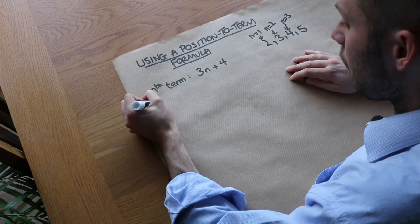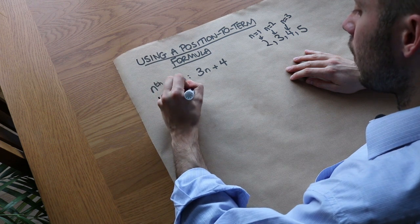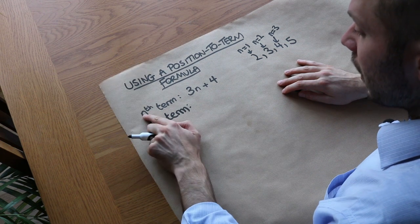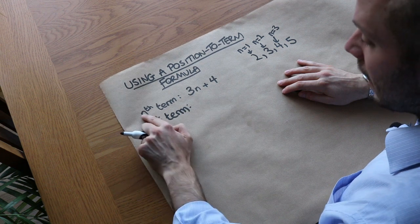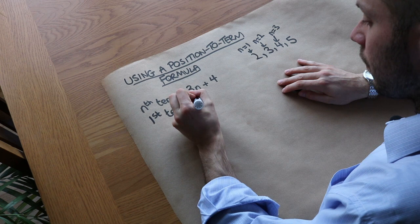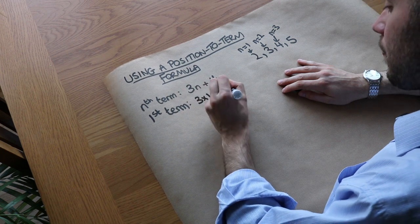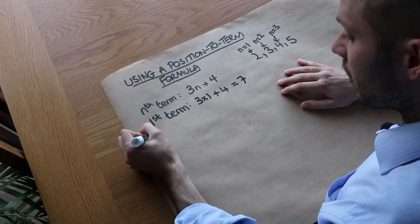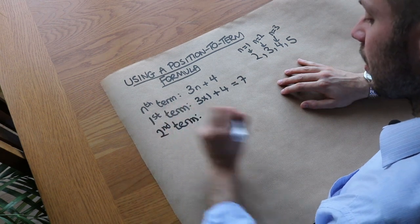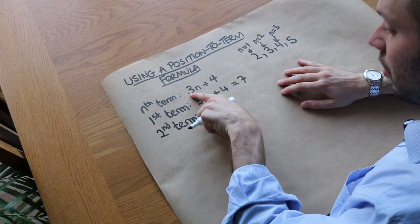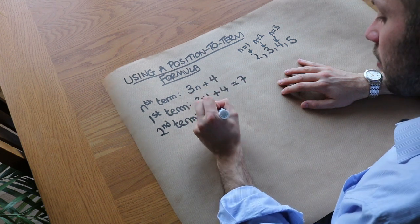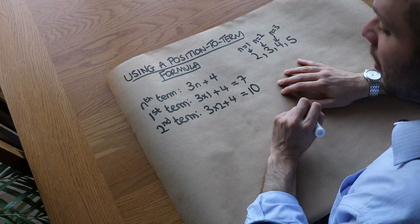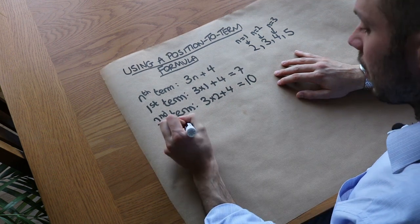So let's say we wanted the first term of a sequence with formula 3n plus 4. The nth term is 3n plus 4, so the first term is where n is 1. That gives us 3 times 1 plus 4 — 3 plus 4 equals 7. So the first term in this sequence would be 7. For the second term, n is equal to 2, so we do 3 times 2 plus 4, which gives us 6 plus 4 equals 10. The first two terms are 7 and 10.